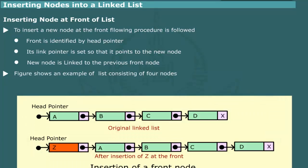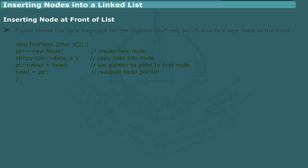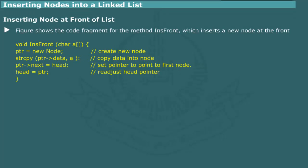Figure shows an example of a list consisting of four nodes containing letters A, B, C, and D, to which a new node Z is added at the front. The end of the list is marked by a cross. The next figure shows the code fragment for the method Insert Front, which accepts a character string for the node value.